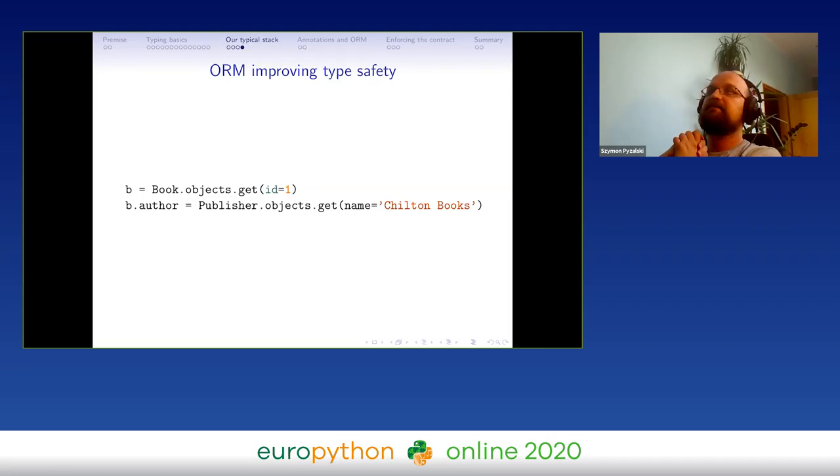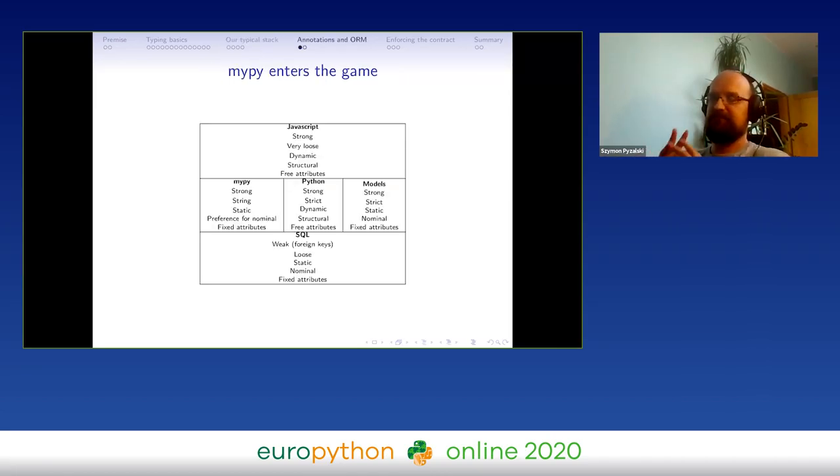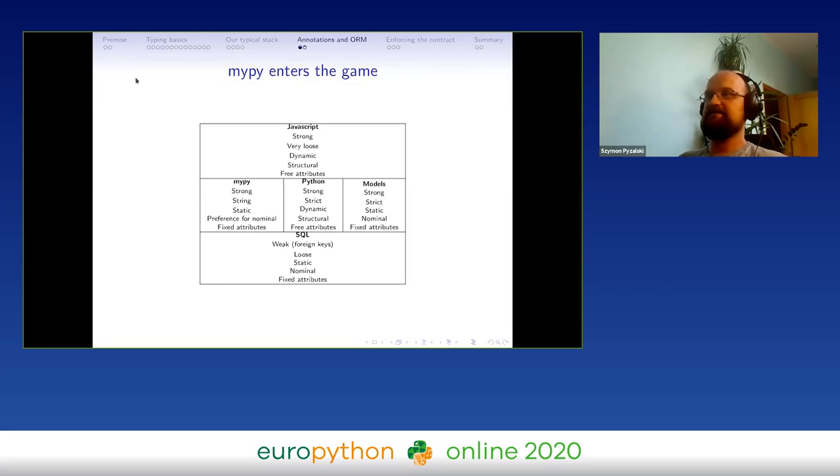This is one of the benefits of ORM, but this is something that we have for years now. How about annotations? So let's enter mypy into our stack. Mypy is a strange thing because it uses static analysis of a dynamic code, and it is somehow disturbing for many people. Some people say that it's unpythonic, although actually mypy can give us some benefits. Now let's look at how Django and mypy can work together.